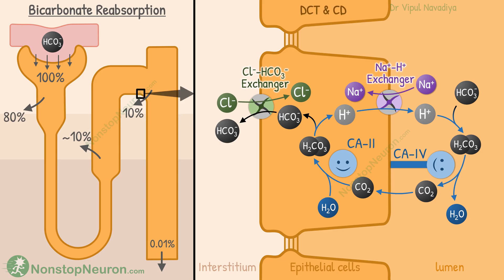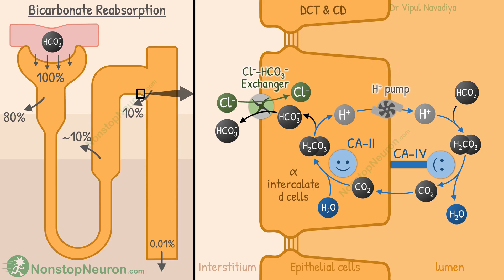In the distal tubule and collecting duct, reabsorption occurs by alpha-intercalated cells. They have hydrogen pumps at the apical membrane to secrete the hydrogen ions. The basolateral exit of bicarbonate occurs by the chloride-bicarbonate exchanger, as in the thick ascending limb.